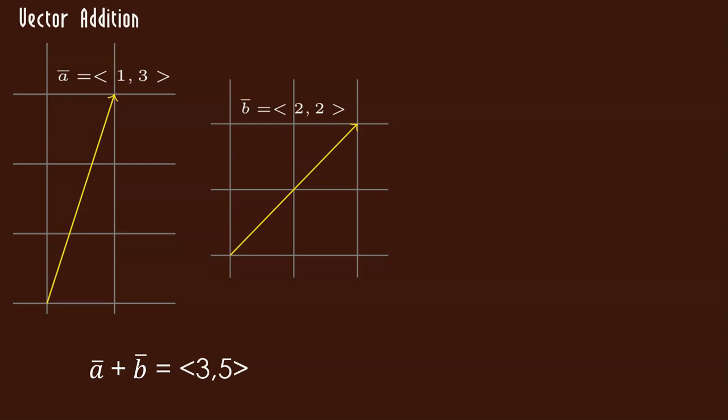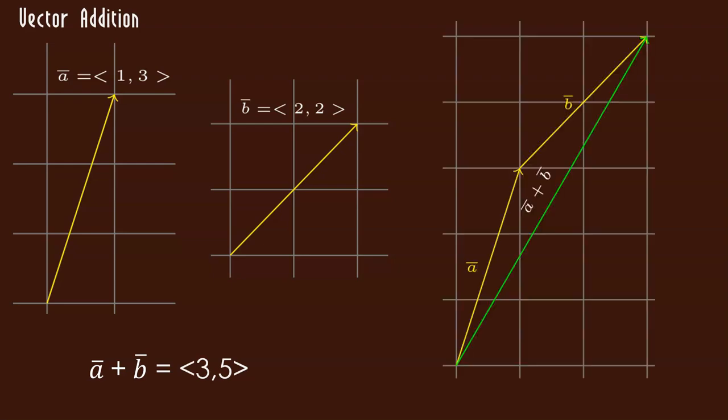And if I want to draw a picture of what's happening, you've got A goes 1 over and 3 up. And then at the end of A, you can attach the B vector and you go 2 over and 2 up. So the sum is represented by that green arrow, which goes 3 over and 5 up. Nice thing about addition of vectors is it's commutative. I could say B plus A and I'll get in the same spot. What else can I do?